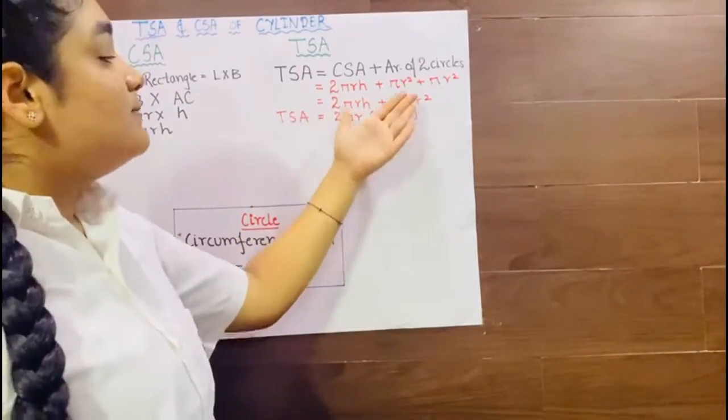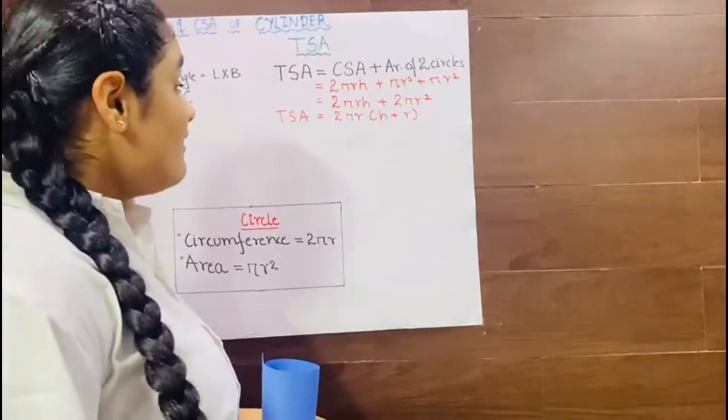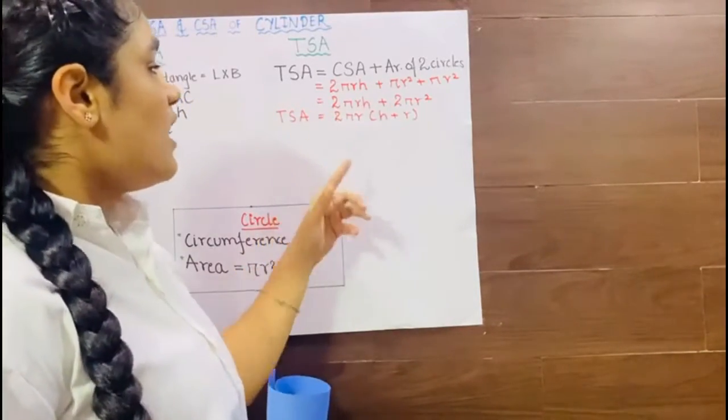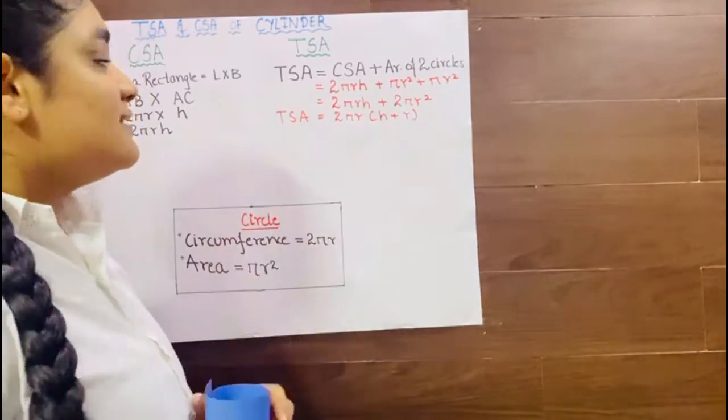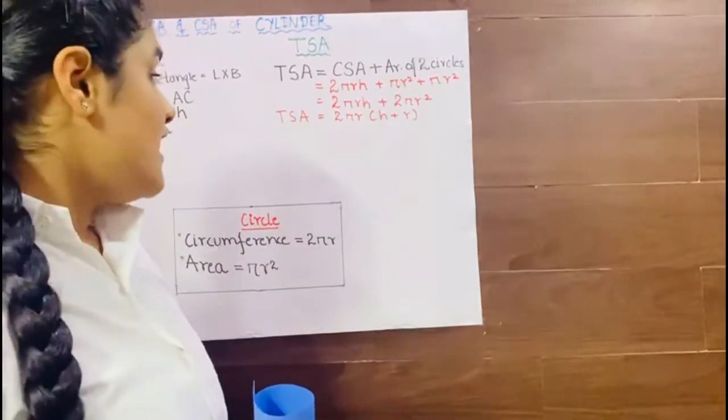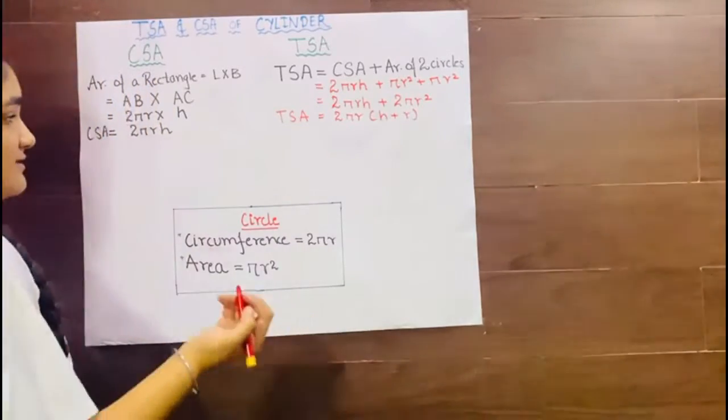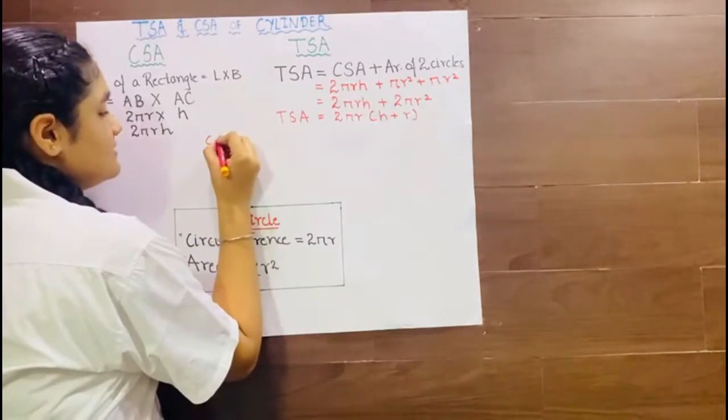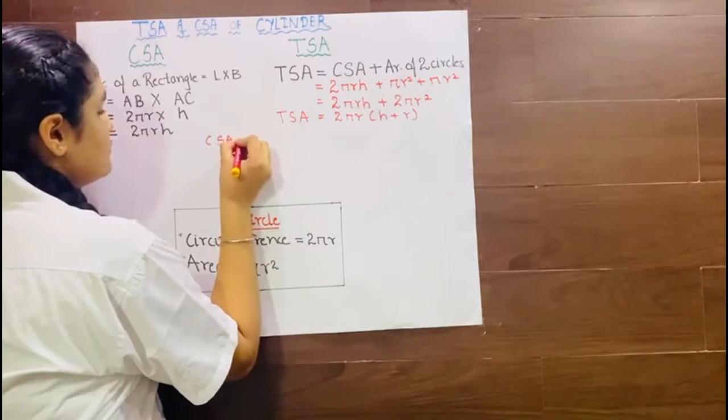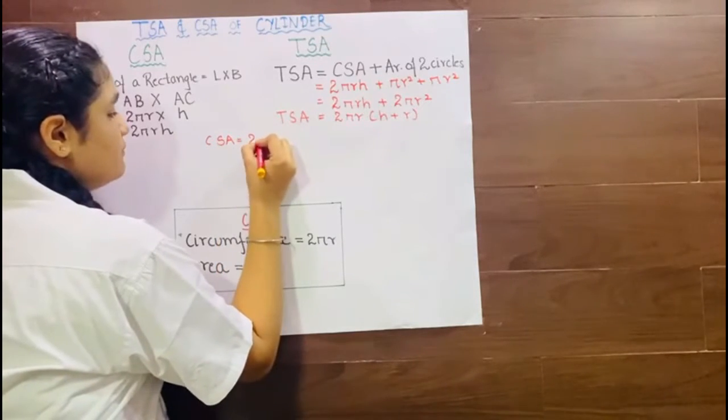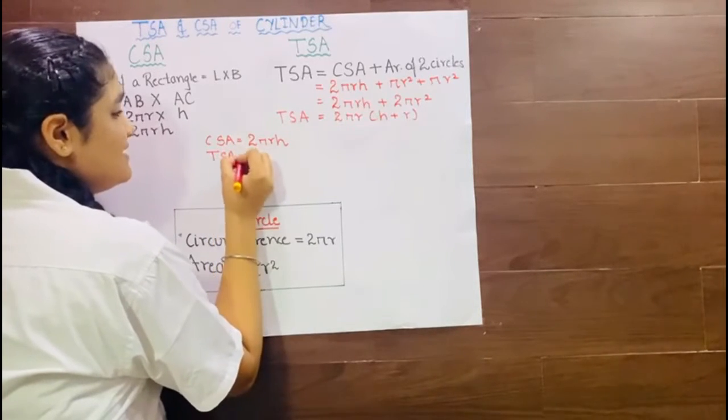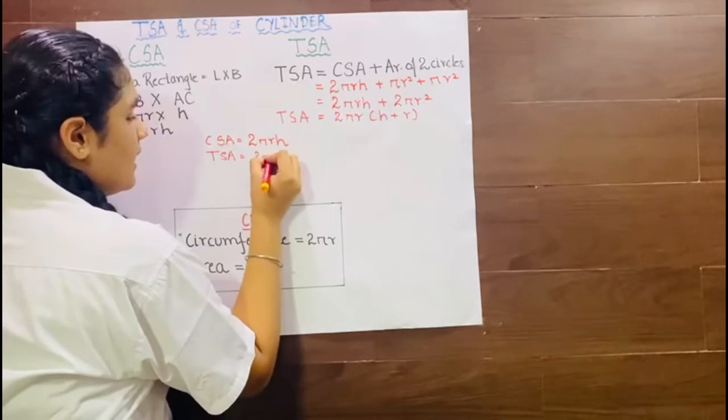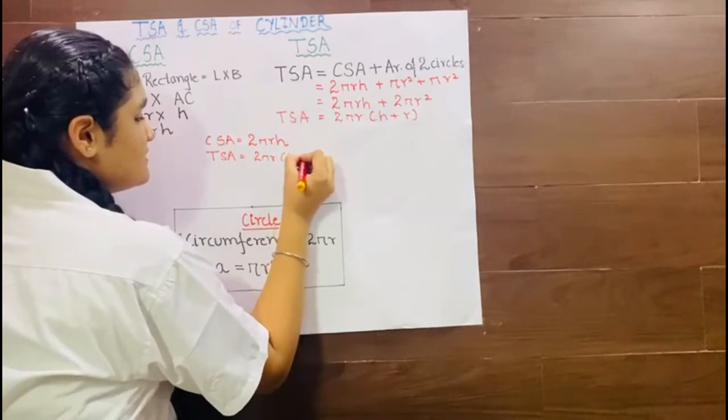So 2πrH plus 2πr². Now we have taken common that is 2πr, since 2πr is here also and here also. And we get the formula that is 2πr(H + r). So I will write it again. CSA is equal to 2πrH and TSA is equal to 2πr(H + r).